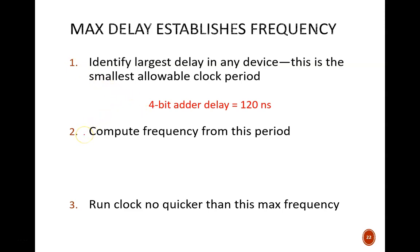Next, we compute the frequency from that period. 1 over 120 nanoseconds means 1 over 120 times 10 to the negative 9 hertz. This is equivalent to 1 over 120 multiplied by 10 to the positive 9 hertz. 1 over 120 equals 0.0083. 10 to the 9th power is replaced by the metric prefix giga. So, the result is 0.0083 gigahertz.